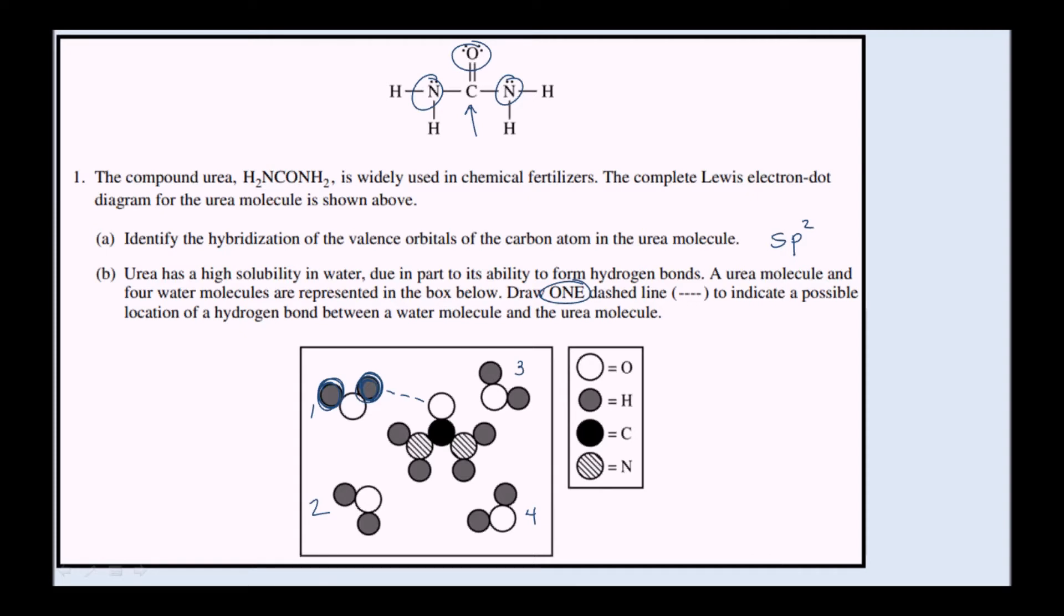Alternatively, hydrogen bonding could occur between the hydrogen on urea, because the hydrogen on urea is bonded to an electronegative nitrogen. That hydrogen could do hydrogen bonding with the lone pair of electrons on the water. So we could also have hydrogen bonding there. Important, just do one of these options. There's lots of different places to do it, but just choose one.